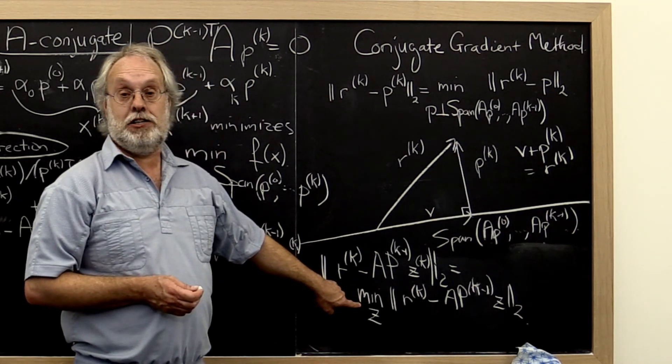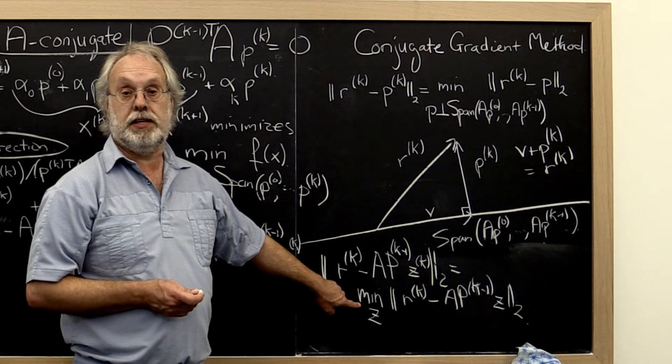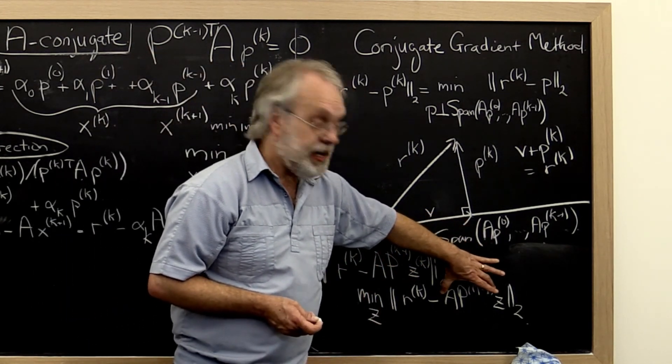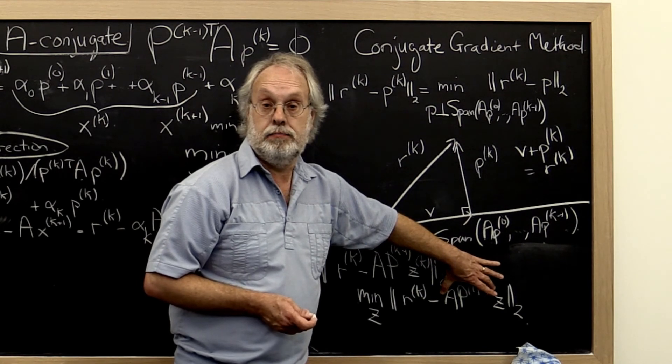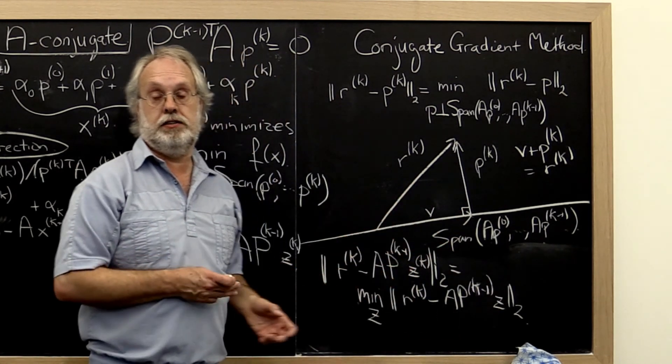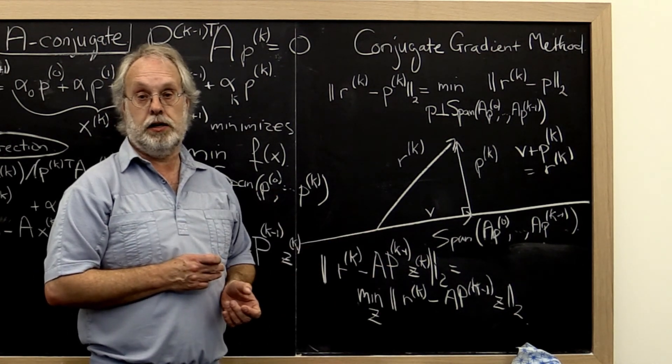And this is a minimization problem that we've seen before. That's simply a linear least squares problem with the matrix A times Pk minus 1. So now we have characterized all of this in terms of something that we know how to solve.